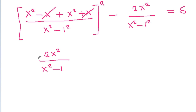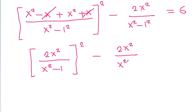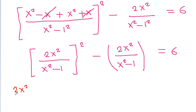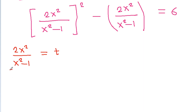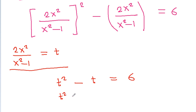So we get (2x²/(x²-1))² minus 2x²/(x²-1) is equal to 6. If we let t equal 2x²/(x²-1), then we get t² minus t is equal to 6.